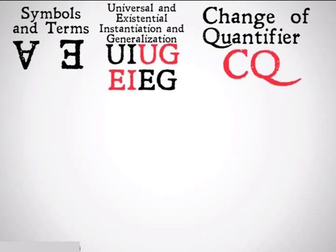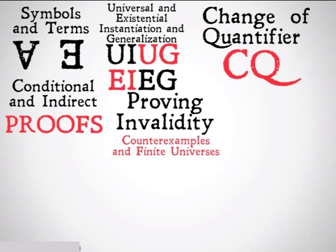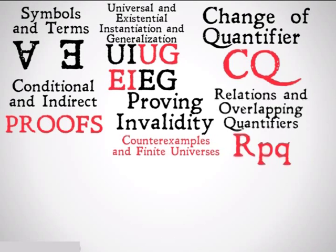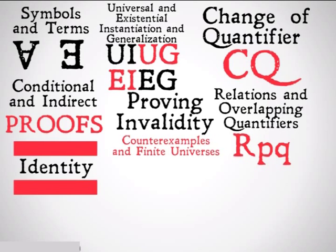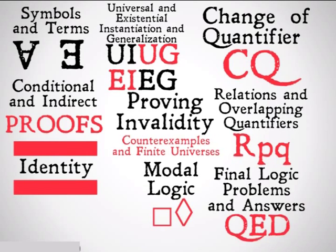That was proving invalidity with counterexamples and finite universes. Next up is relations and overlapping quantifiers, identity, modal logic, and the final answers to some logic problems. Watch a new video every single day for 100 days here at carnadies.org. Stay skeptical, everybody. Thank you.